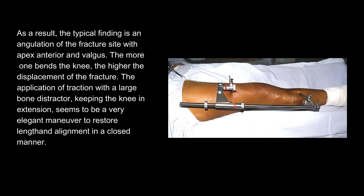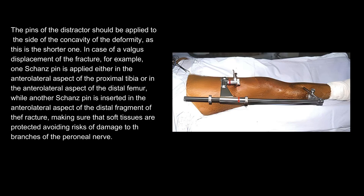The more one bends the knee, the higher the displacement of the fracture. The application of traction with a large bone distractor, keeping the knee in extension, seems to be a very elegant maneuver to restore length and alignment in a closed manner. The pins of the distractor should be applied to the side of the concavity of the deformity, as this is the shorter one. In case of valgus displacement, one Schanz pin is applied either in the anterolateral aspect of the proximal tibia or the anterolateral aspect of the distal femur, while another Schanz pin is inserted in the anterolateral aspect of the distal fragment, making sure that soft tissues are protected to avoid risks of damage to branches of the peroneal nerve.